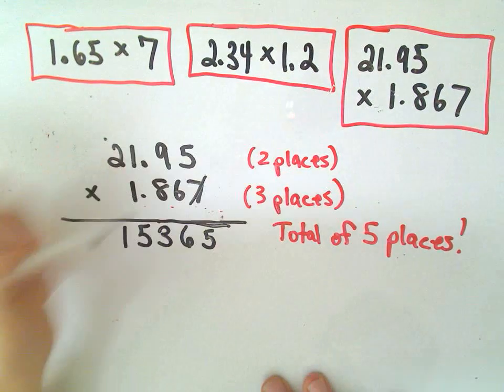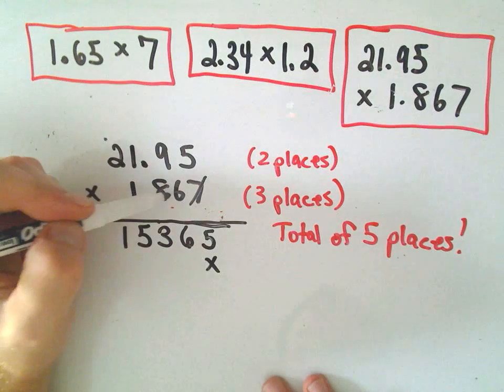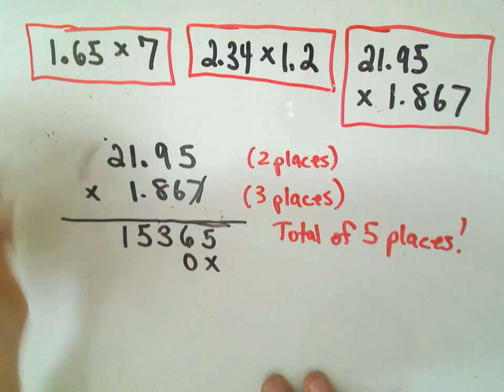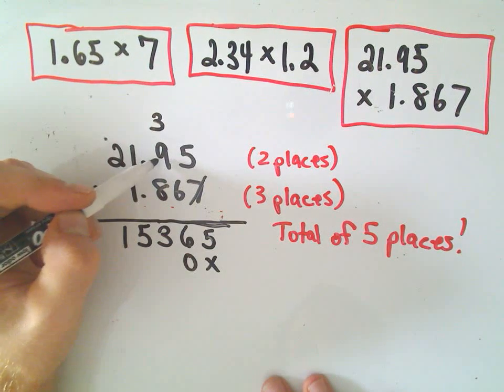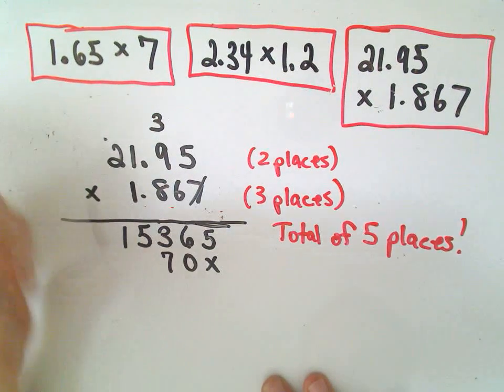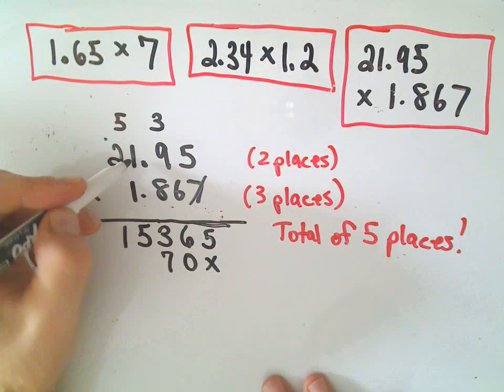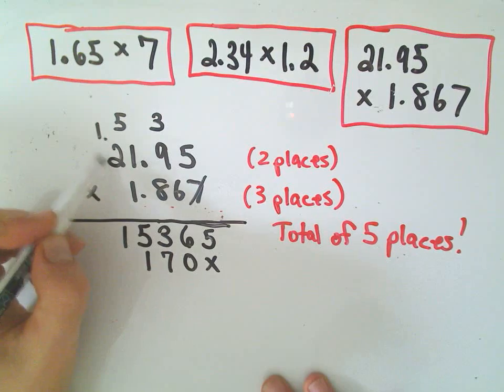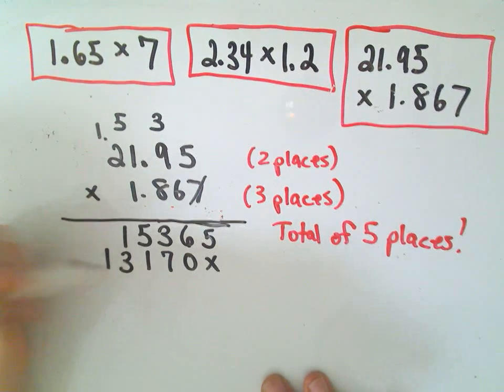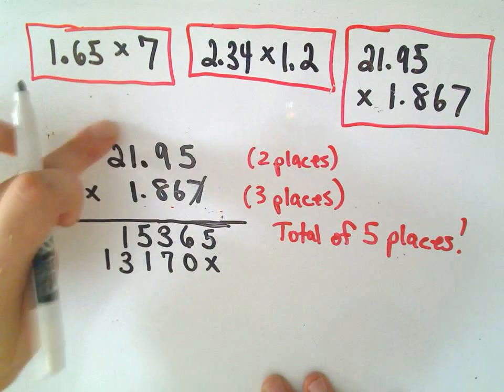All right, so now we've kind of taken care of the 7. So let's see, 6 times 5 is 30, so we'll drop down the 0, carry the 3. 6 times 9 is 54, plus 3 is 57, carry the 5. 6 times 1 is 6, plus 5 is 11, carry the 1. 6 times 2 is 12, plus 1 is 13.